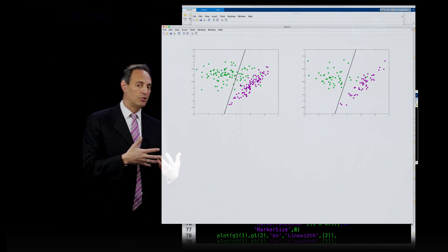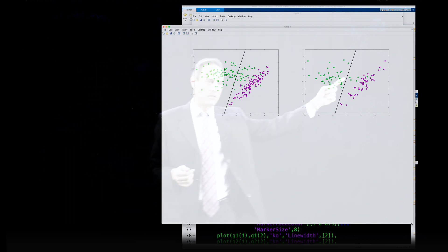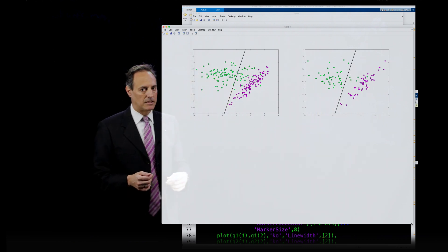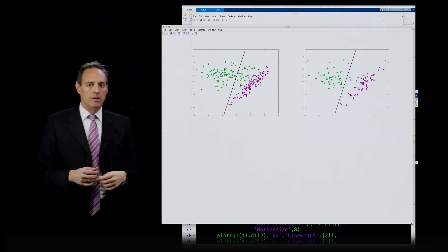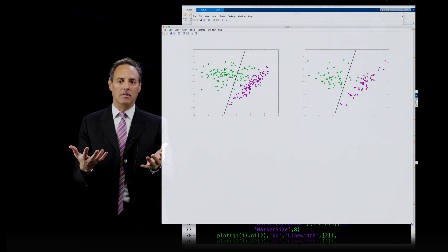You still label most of the green balls green, most of the magenta balls magenta, and you make mistakes. And here are your mistakes. All these green balls that wander over that line are now going to be misclassified.